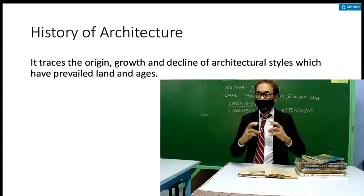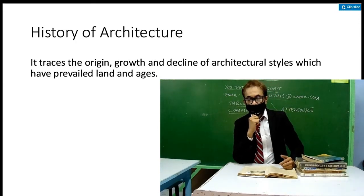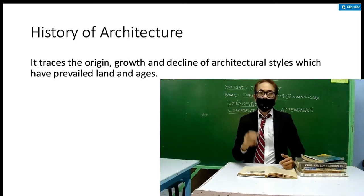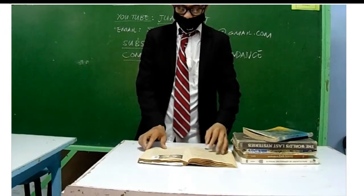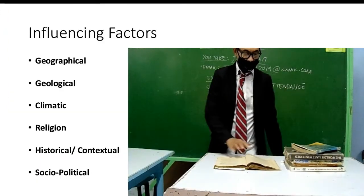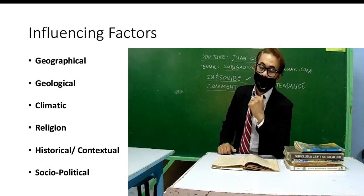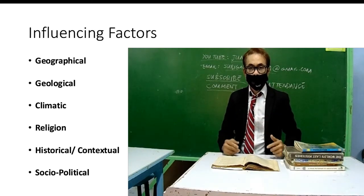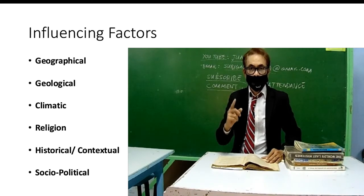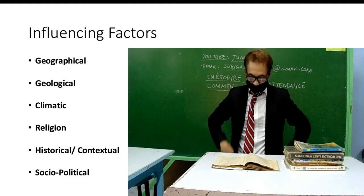Let's proceed. What is the history of architecture? It traces the origin, growth, and decline of architectural styles which have prevailed across lands and ages. There are about six influencing factors in architecture — these are what influenced how we design houses or structures.